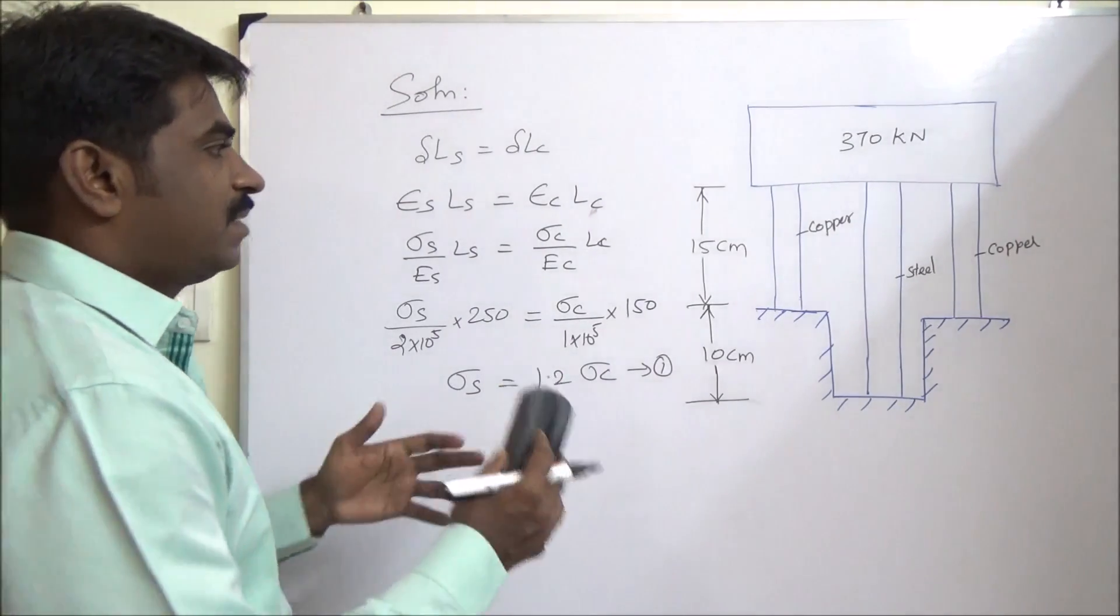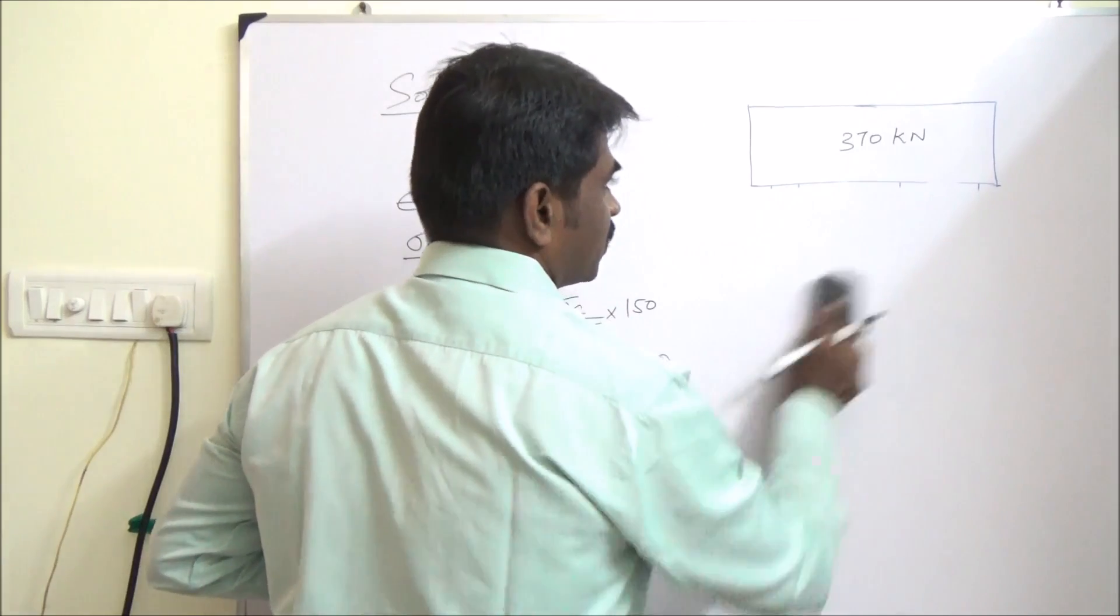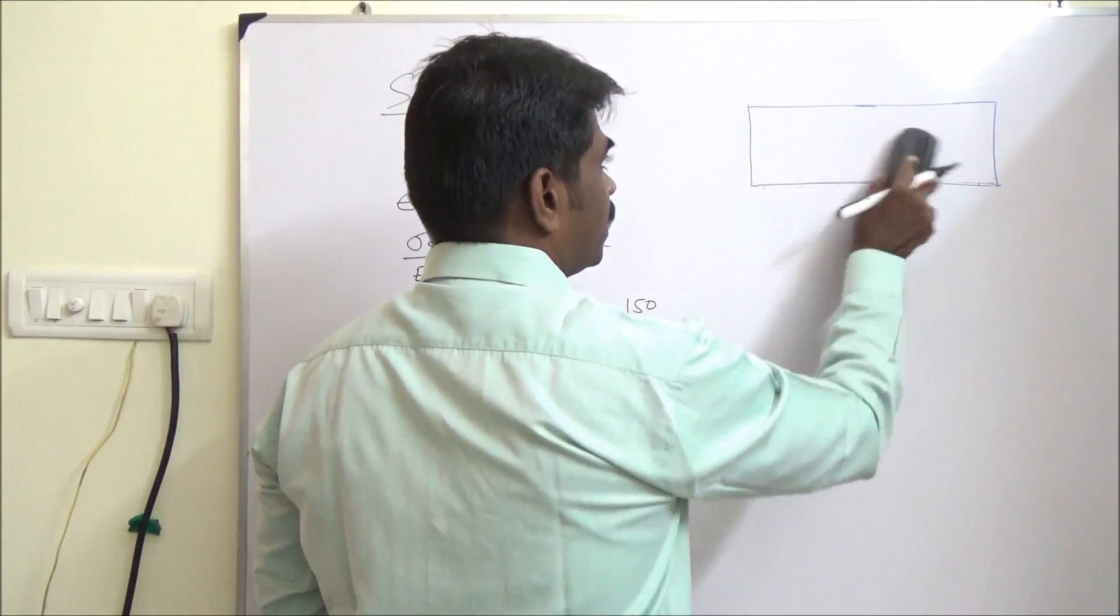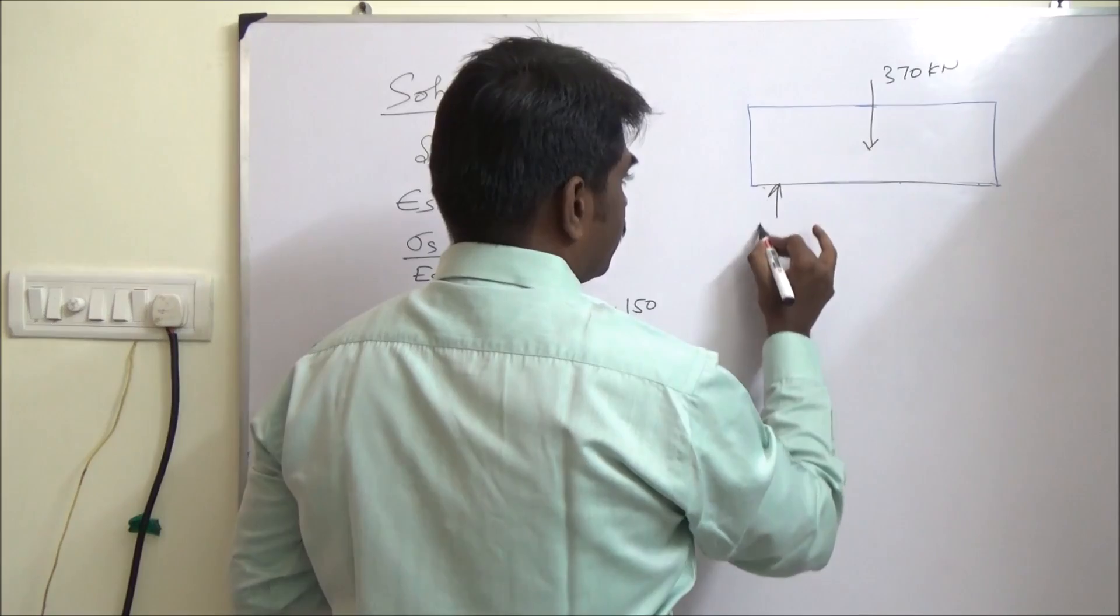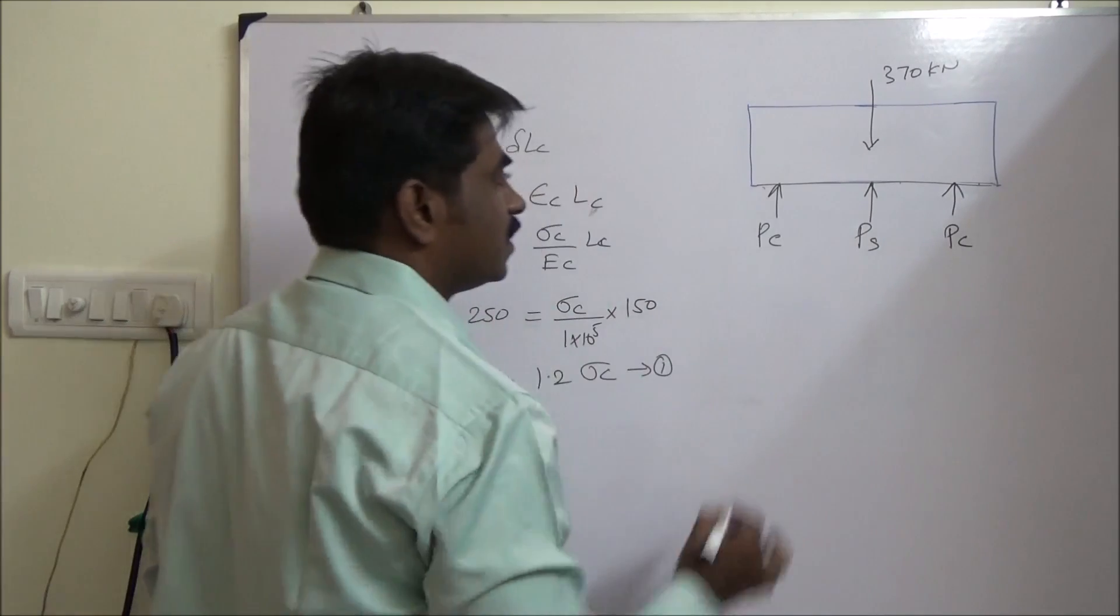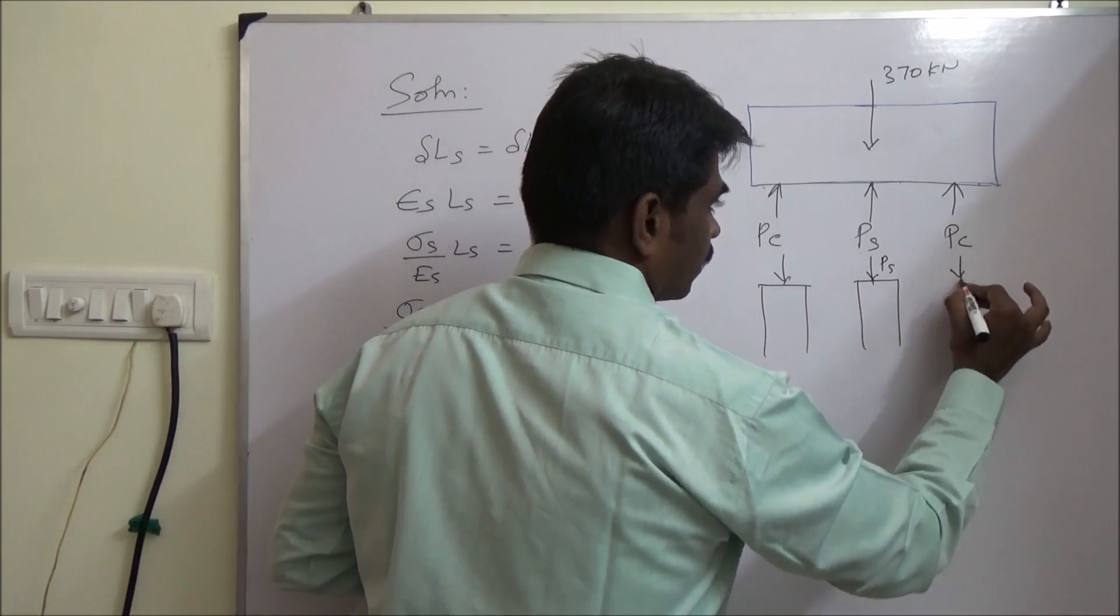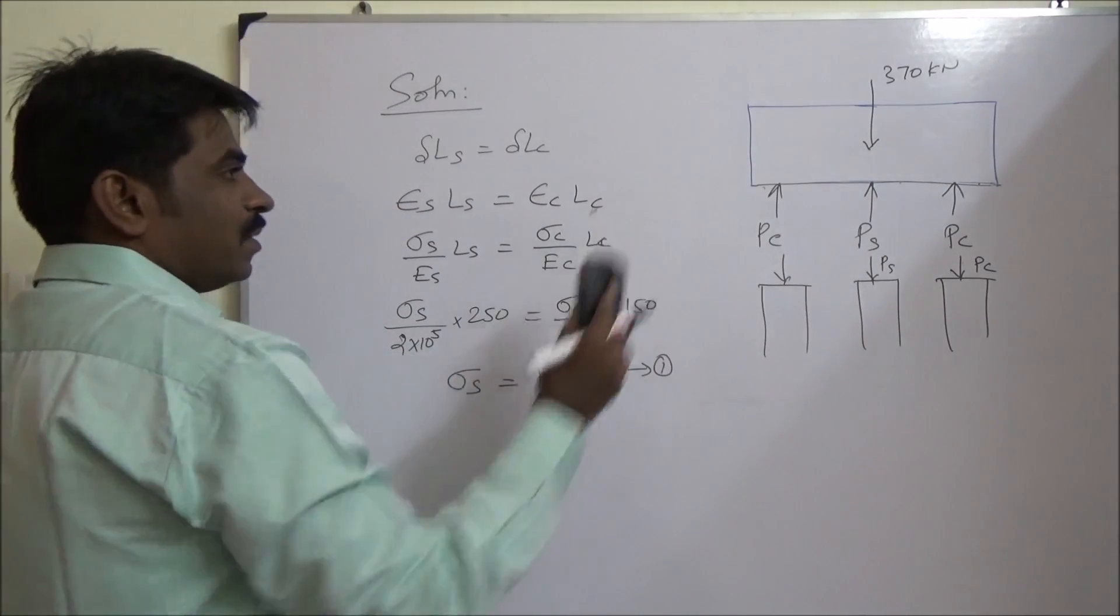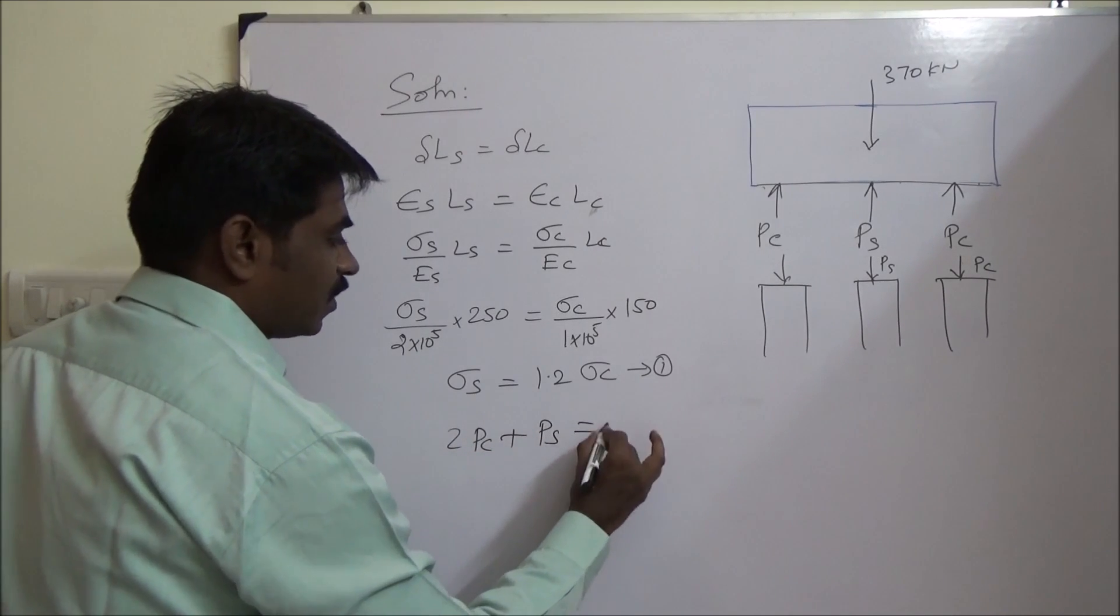This is one relation. The other relation: what happens to the load sharing on the rods or load shared by the rods. So this load, if you draw the free body diagram, 370 kN supported by PC, the load shared by copper, and PS. All are compressive.